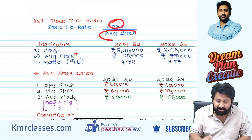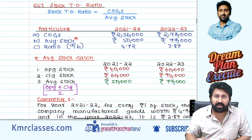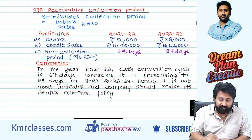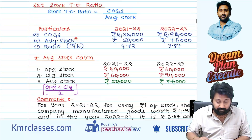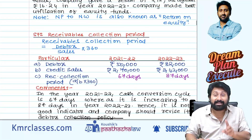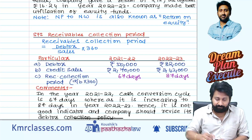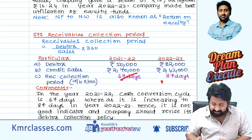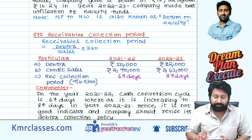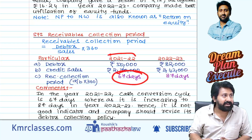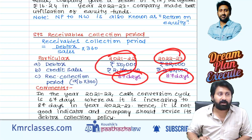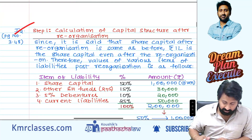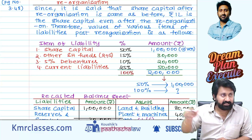Here they did not ask debtor turnover ratio; they asked about the collection period — number of days — so the reverse formula comes: debtors divided by sales. Debtors are given in the question, credit sales are given. 67 days versus 87 days — lower is better because money is blocked in debtors for 67 days in 2021-22, but in 2022-23 it is blocked for 87 days. Higher is always worst — more money is blocked.